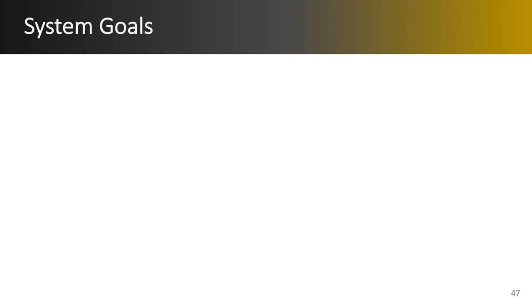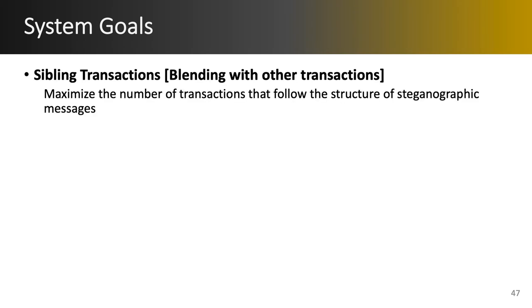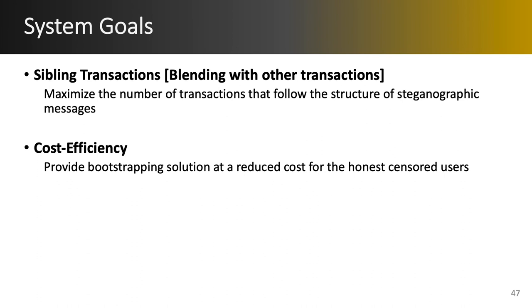But before that, we will go over the system goals which we use as the criteria to select a certain transaction type within each cryptocurrency, such as pay-to-public-key-hash in the previous slides. The first goal is the percentage of transactions that have the same type and structure as the one containing the encoded message — we want this number as high as possible to make it difficult for the adversary to block or detect the message. For each cryptocurrency, we select the most commonly used transaction type. Next is cost efficiency: there is always a cost associated with cryptocurrency transactions, so we aim to reduce the cost for honest censored users. Keep in mind that bootstrapping information is requested infrequently and these costs will be amortized over time.